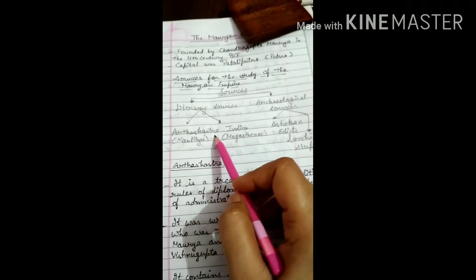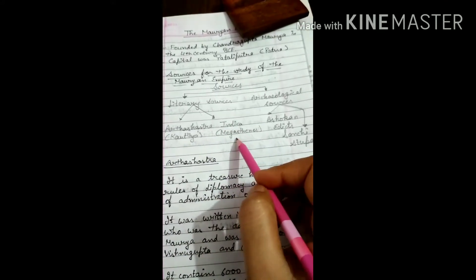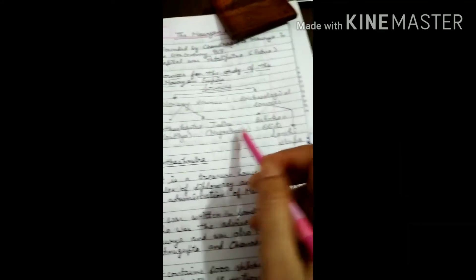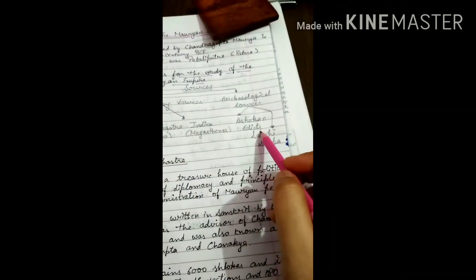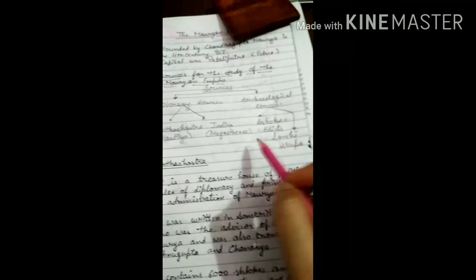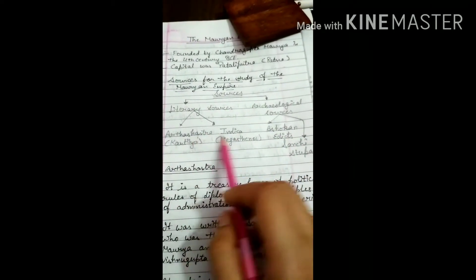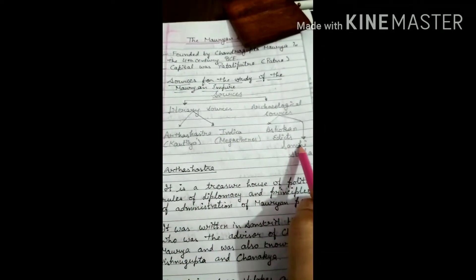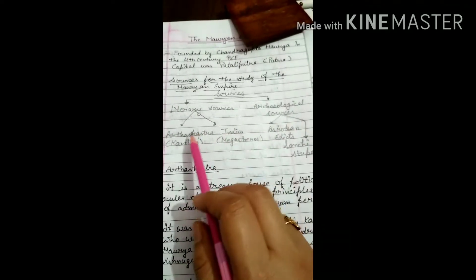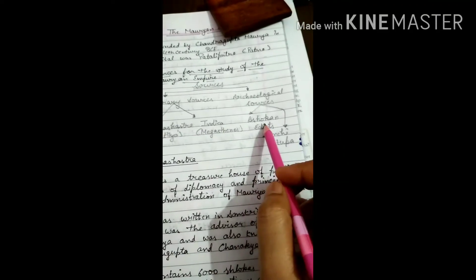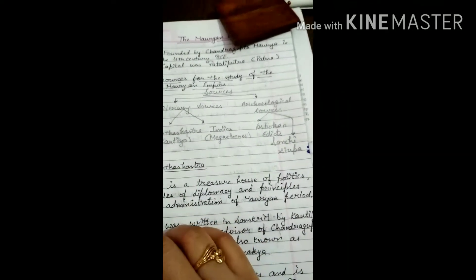Literary sources are also divided into two parts: Arthashastra, a book written by Kautilya, and Indica, written by Megasthenes. Archaeological sources are also divided into two parts: Ashokan Edicts and Sanchi Stupa. Students, this is the part of your syllabus. You can check your syllabus also. This is what you have to do and what you can be asked in the exams.